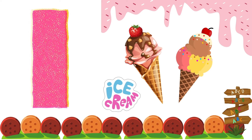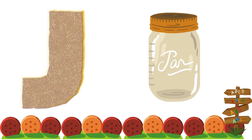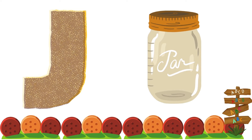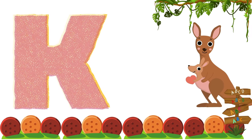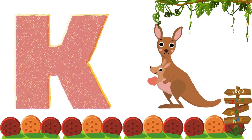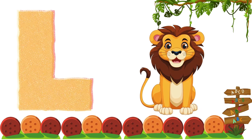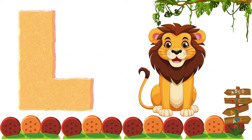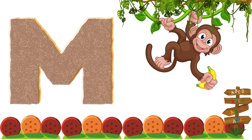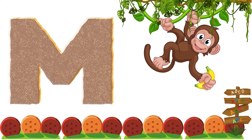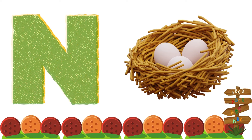I is for Ice Cream. J is for Jaw. K is for Kangaroo. L is for Lion. M is for Monkey. N is for Nest.